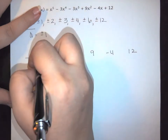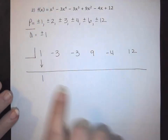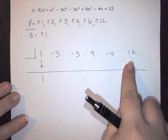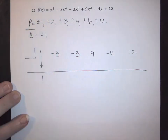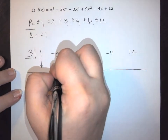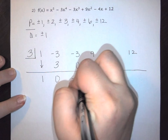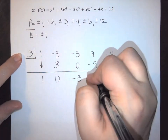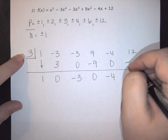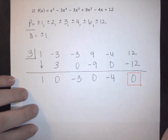Dropping down and working through: 1 times 3 is 3, add to get 0; bottom times box is 0, giving -3; bottom times box is -9, giving 0; adding gives -4; bottom times box is -12, giving 0. We get a remainder of 0, confirming x - 3 is a factor. Starting at x⁵, we're now at x⁴.